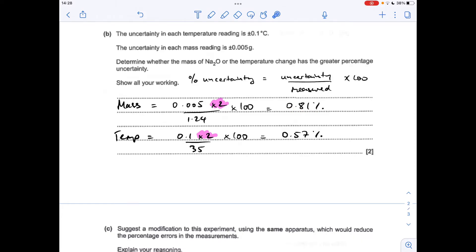Temperature, again, was measured by two values, an initial and a final temperature. So we double the uncertainty again, then divide by the amount measured, times 100, 0.57%. So obviously the mass has got the greater percentage uncertainty.